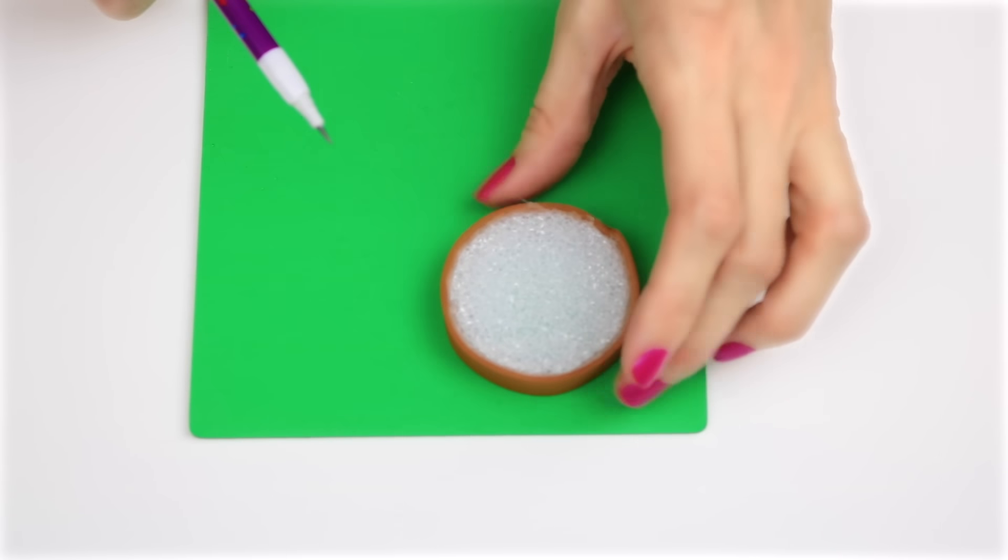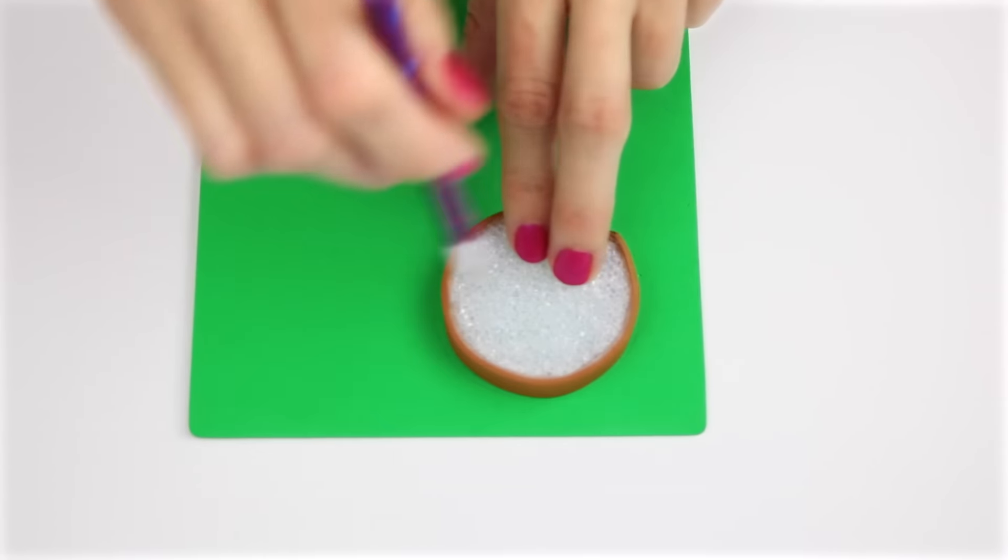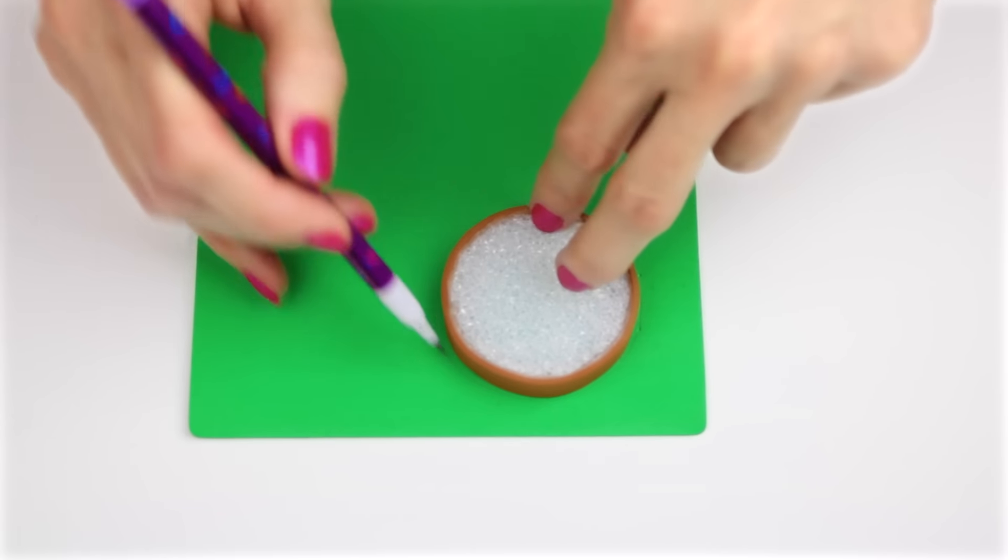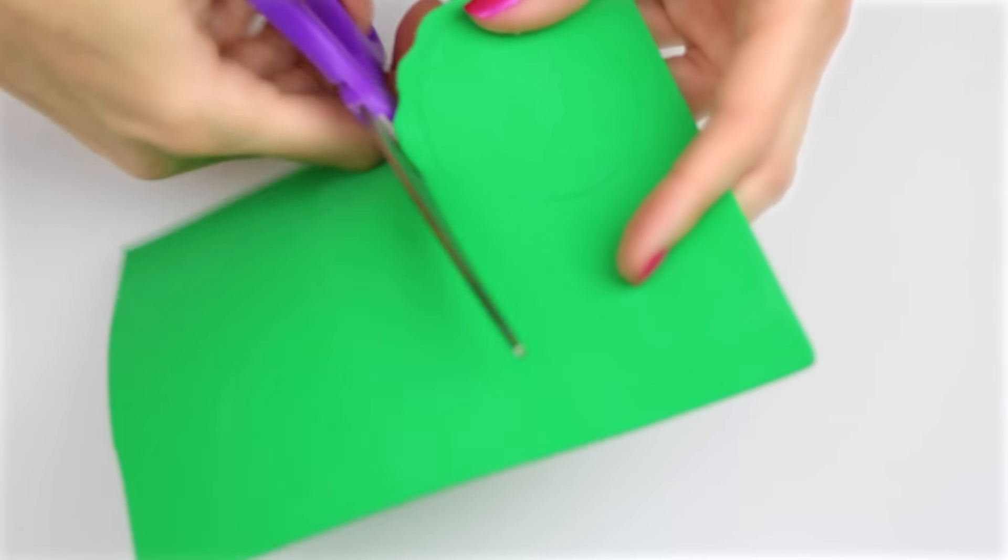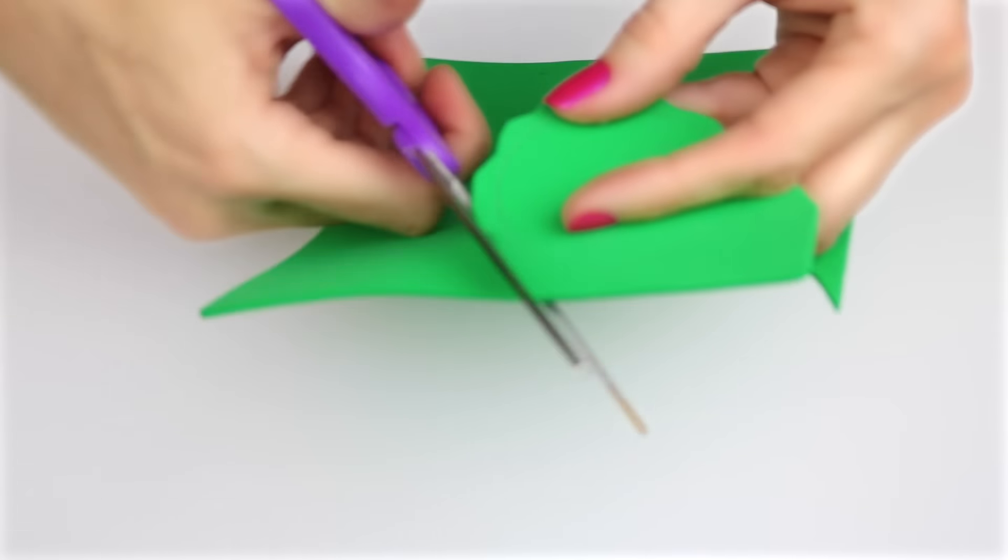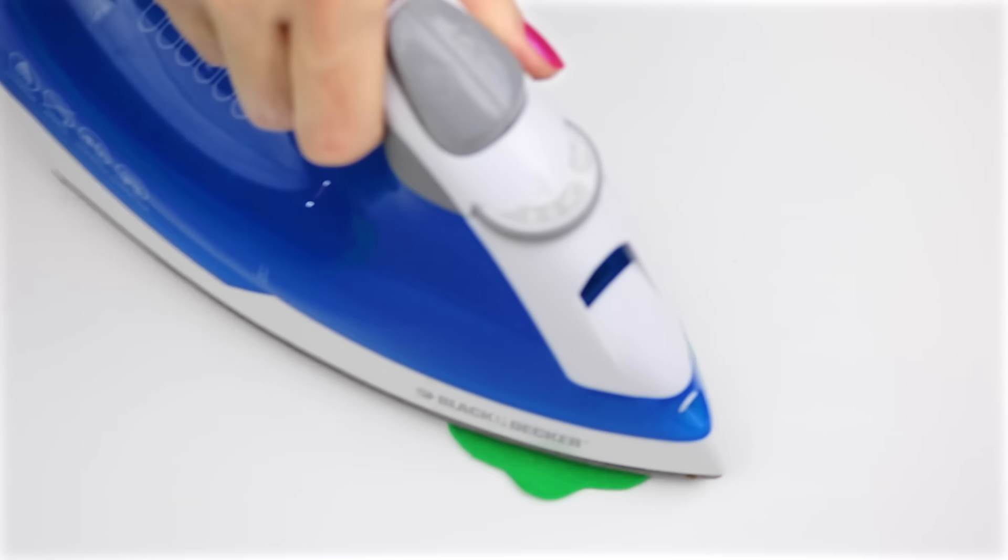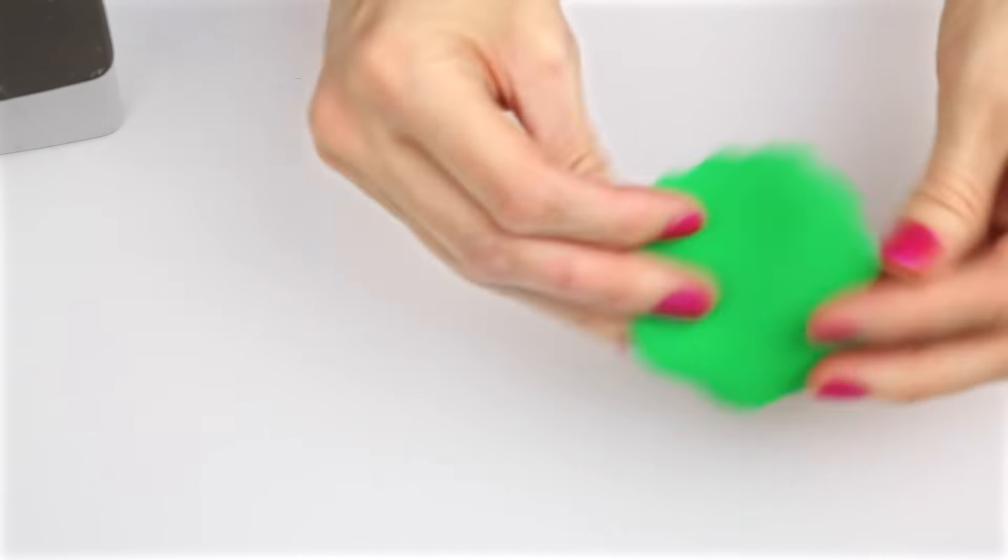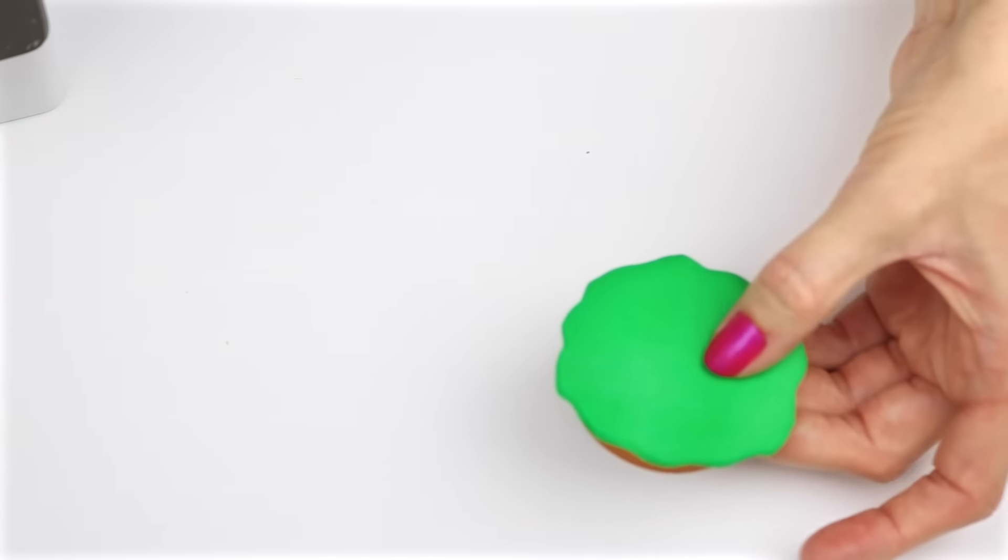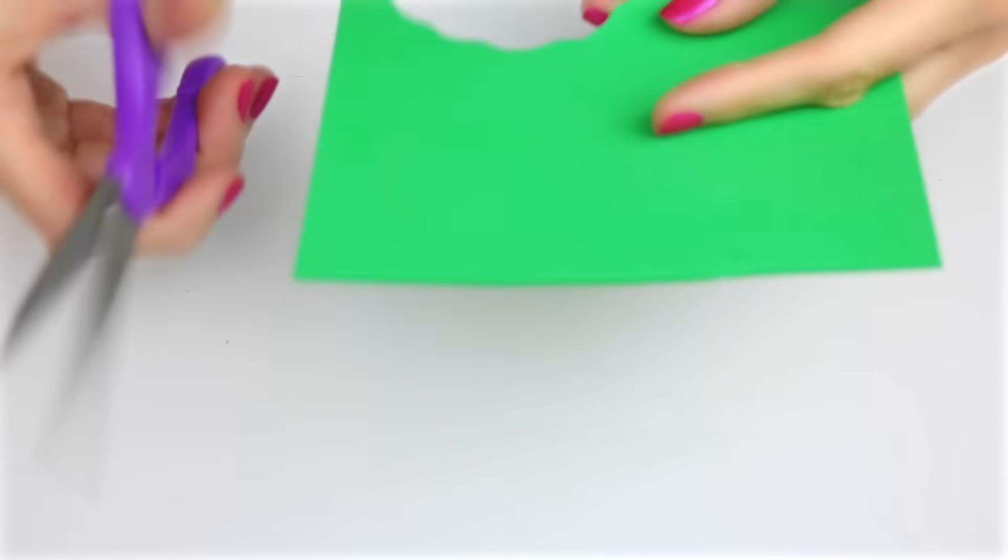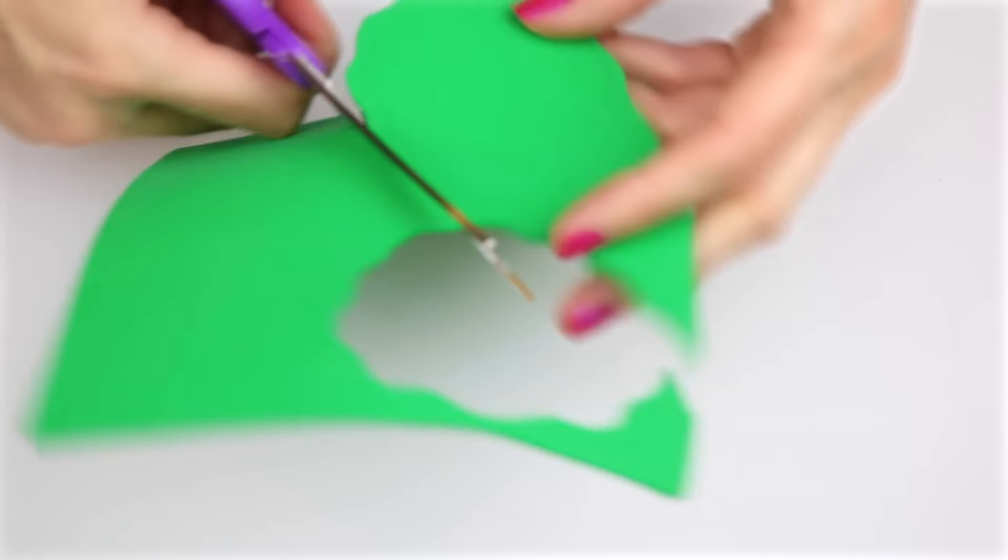For the lettuce, I'm going to use a piece of green foam. Trace around the middle bun, then cut it out in a wavy pattern. Place that piece of foam over the iron so it curls up, and then set it aside. Repeat those same steps, but this time use the bottom of the bun.